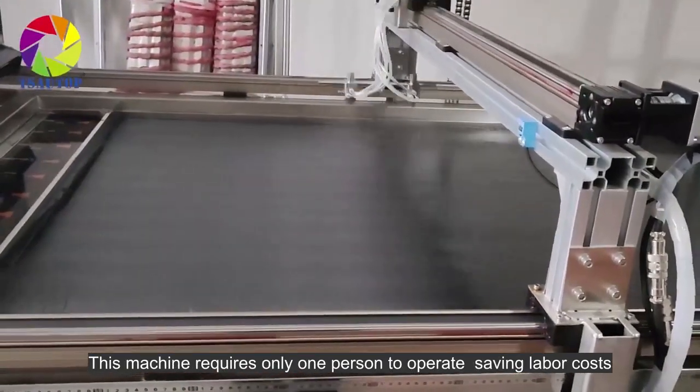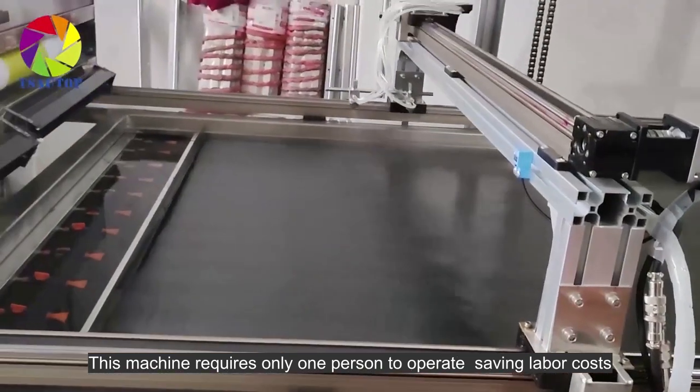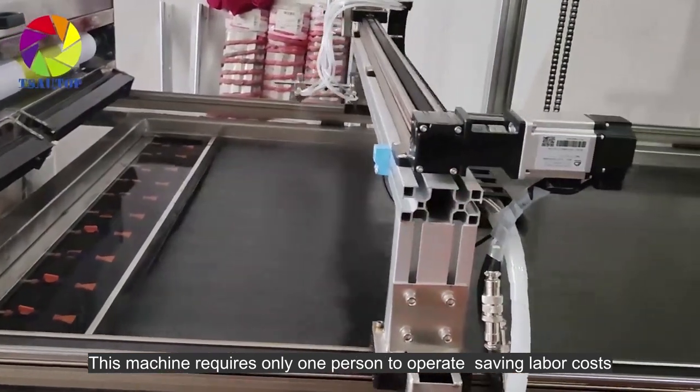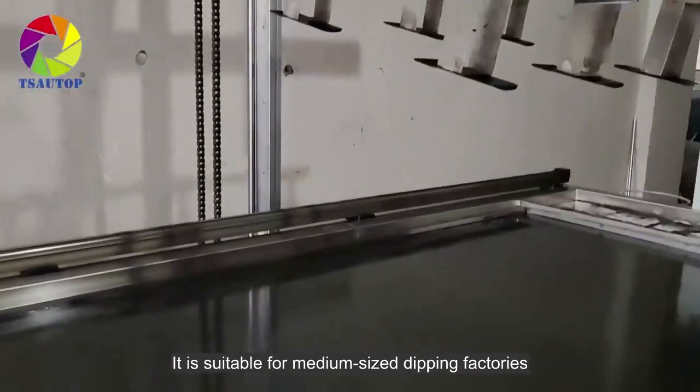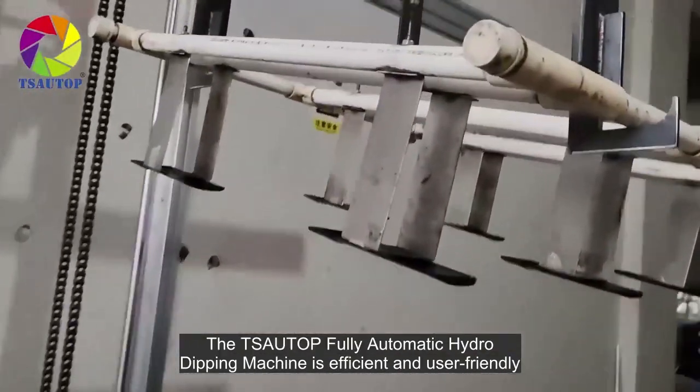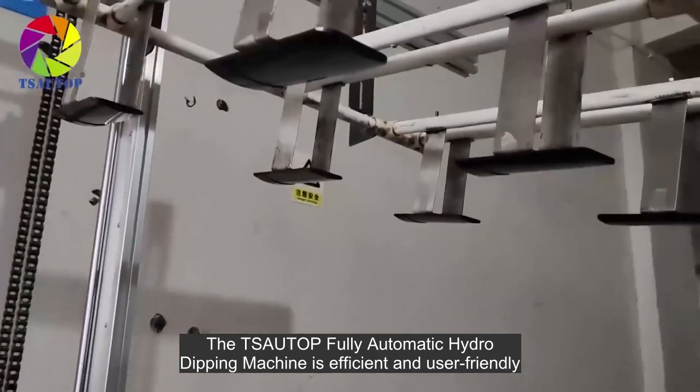This machine requires only one person to operate, saving labor costs. It is suitable for medium-sized dipping factories. The TSA-UTOP Fully Automatic Hydro Dipping Machine is efficient and user-friendly.